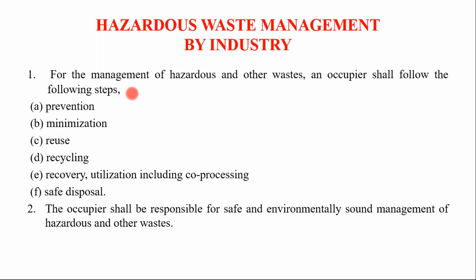For the management of hazardous and other waste, an occupier shall follow these steps. First is prevention — wherever applicable, we have to prevent the generation of hazardous waste by avoiding processes, parameters, or raw materials that generate it. If it is not possible to avoid these processes, then minimization applies — try to reduce the quantity or concentration of hazardous waste to a minimum level.